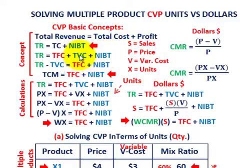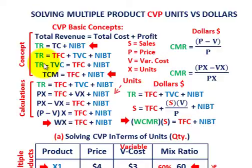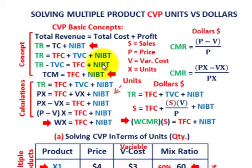We can move total variable costs over to this side of the equation by subtracting it from each side. So our total revenues less our total variable cost — that difference — is going to equal our total fixed cost plus some net income before taxes.